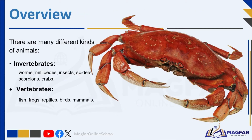Good day and welcome. Today we are on an exciting topic on the different types of animals on earth. There are many different kinds of animals and these animals are invertebrates and vertebrates. At the end of the lesson today you will be able to describe each of these two broad groups giving examples. So let's dig in.